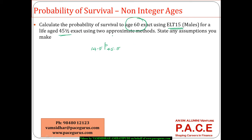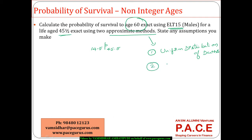We will use two approximate methods. The first approximation assumes a uniform distribution of deaths between the integer ages — so between ages 45 and 46 we assume a uniform distribution of deaths. The second approach uses a constant force of mortality between ages 45 and 46.